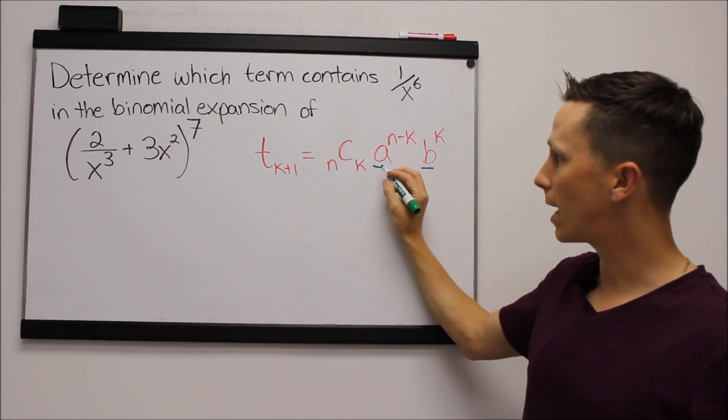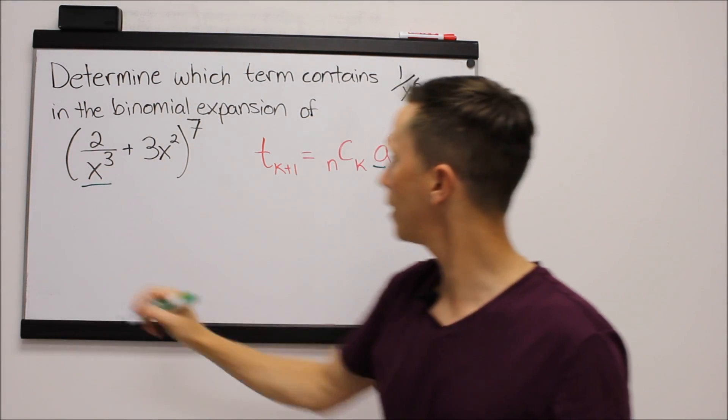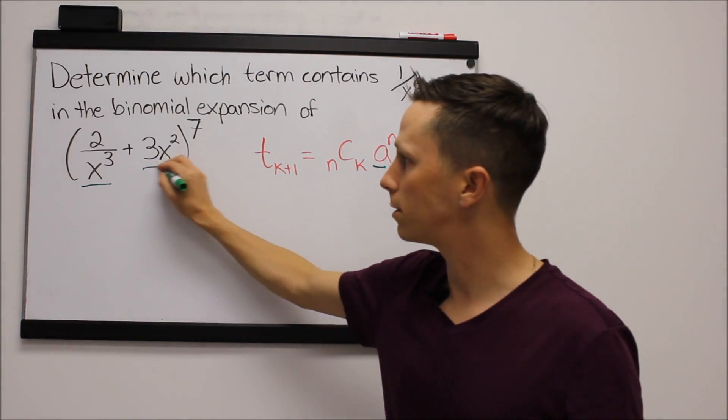Now again, this looks very messy, but let's tie this back. a is the first term in the bracket, and b is the second term in the bracket.